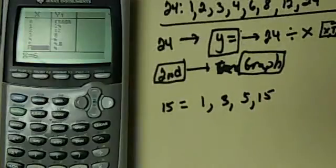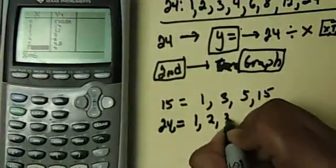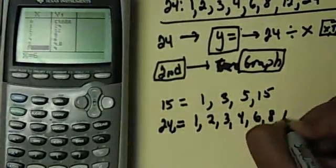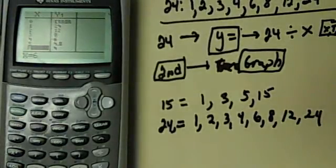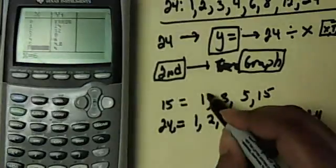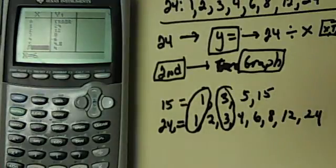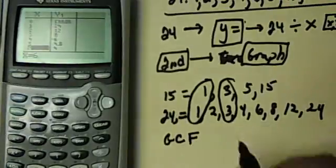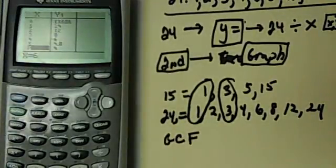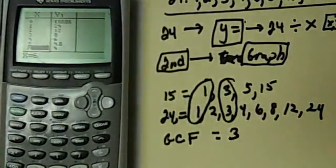Then I have 24, which had all these numbers. 24 had 1, 2, 3, 4, 6, 8, 12, and 24. Well if I want to find out what's the greatest, I can find out what the common factors are. I have a common factor of 1, I have a common factor of 3. But what we usually look for is the GCF, or the greatest common factor. So 15 and 24, we can see that the GCF is 3.